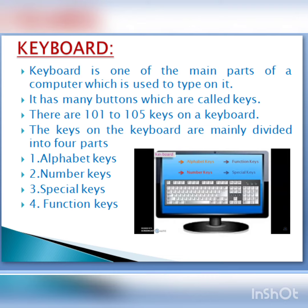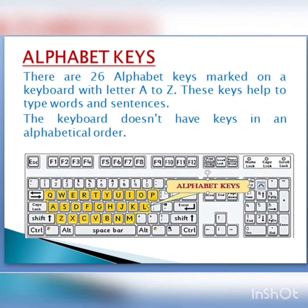Now we will learn one by one about those keys. First are the alphabet keys. There are 26 alphabet keys on a keyboard, marked with the letters A to Z. These keys help you to type words and sentences. The keyboard doesn't have keys arranged in alphabetical order.